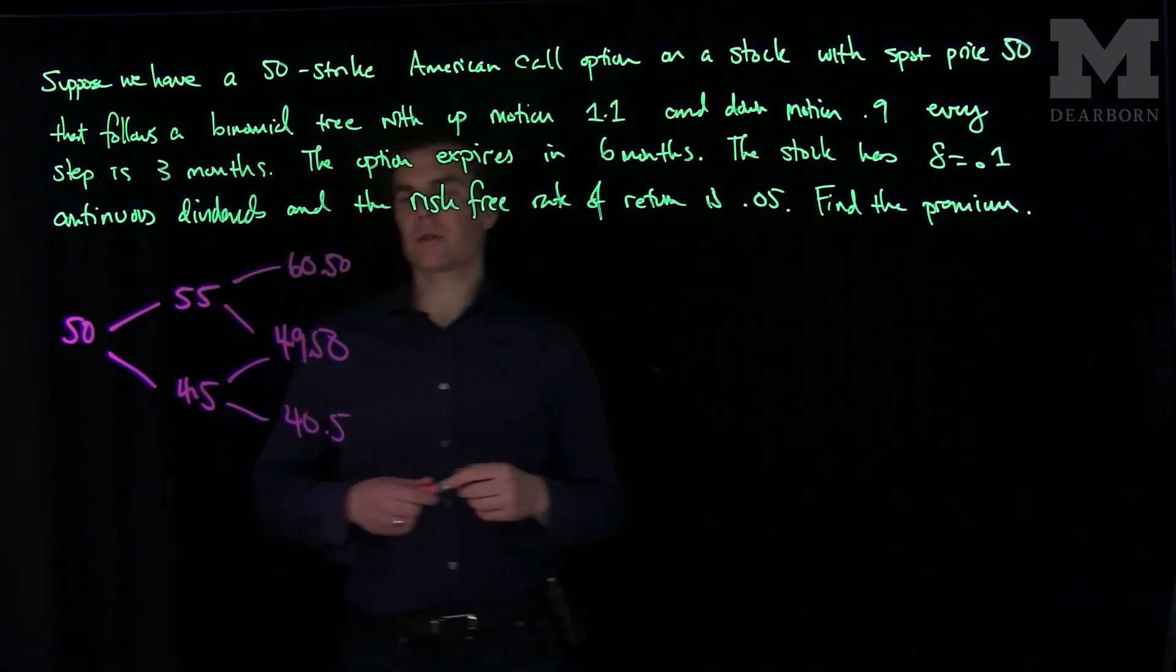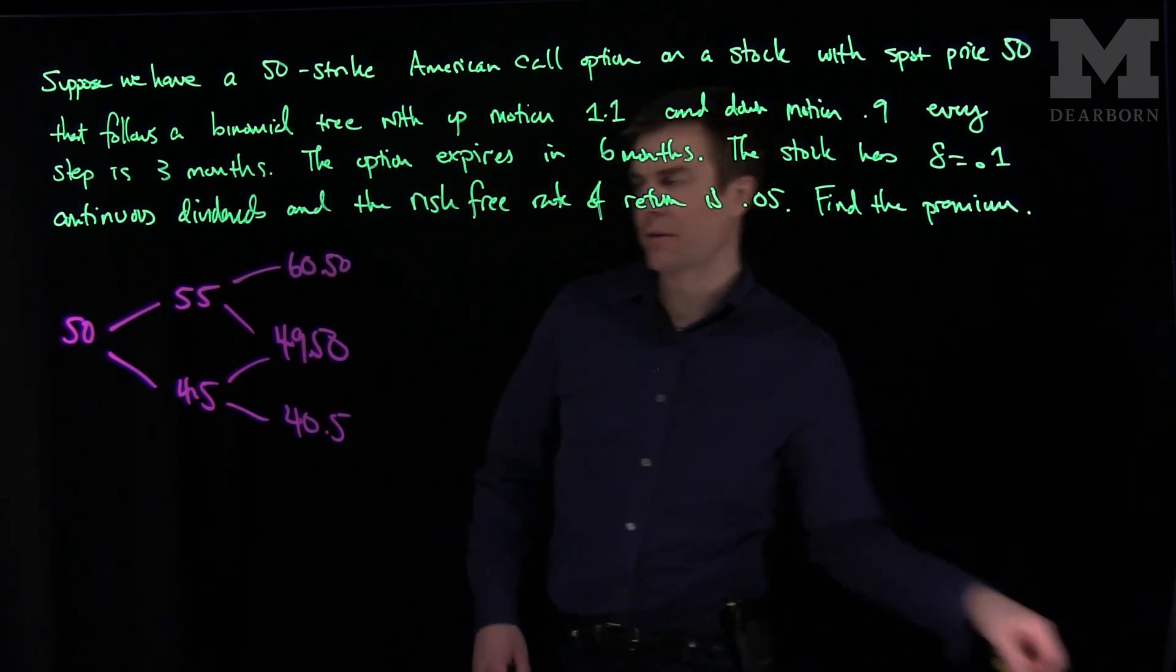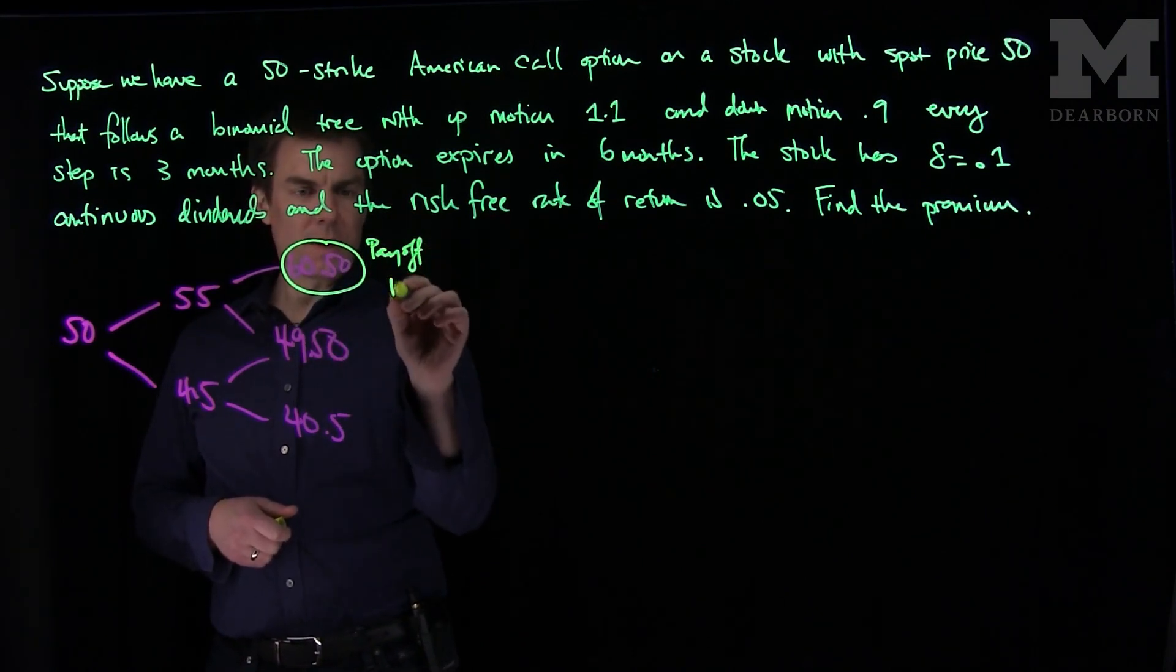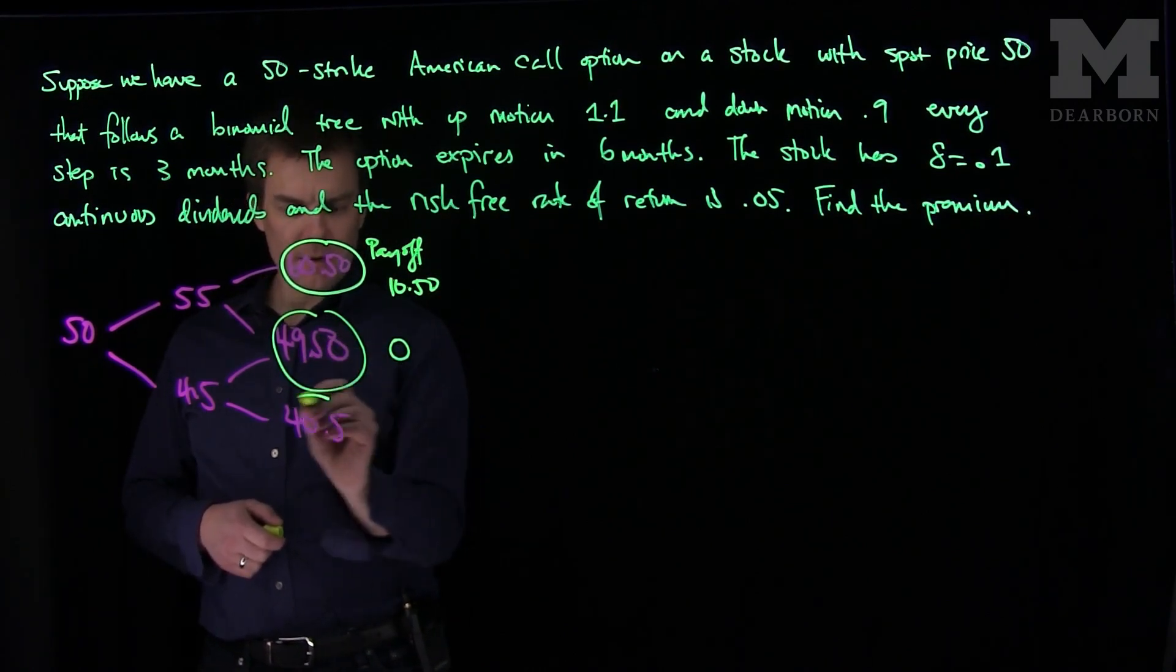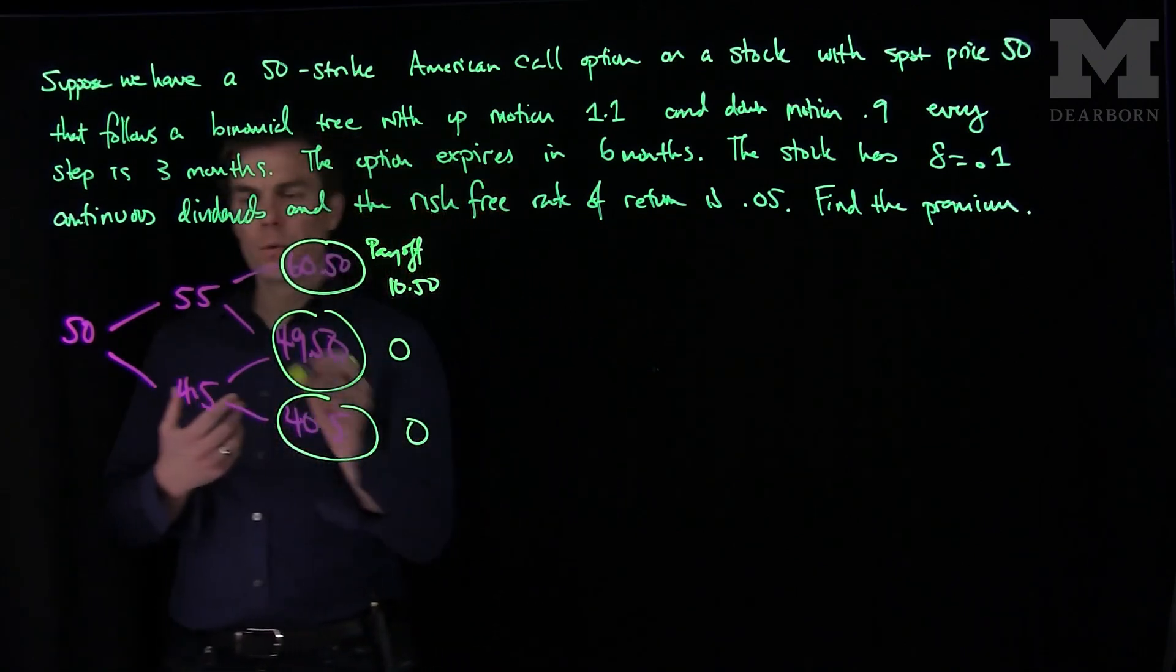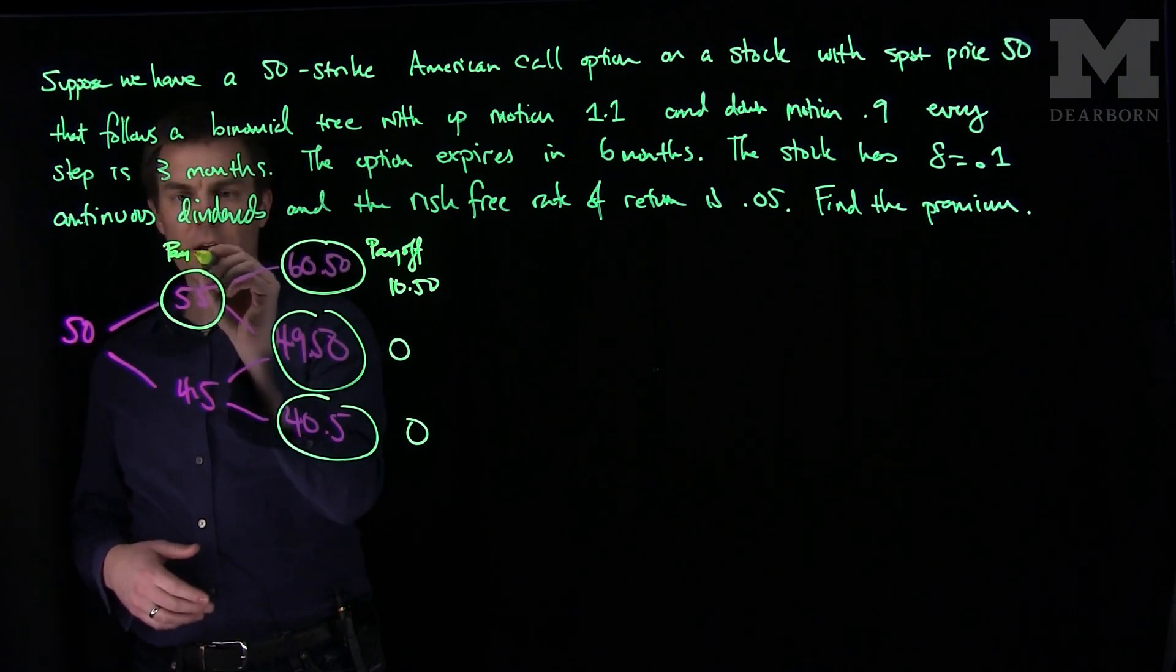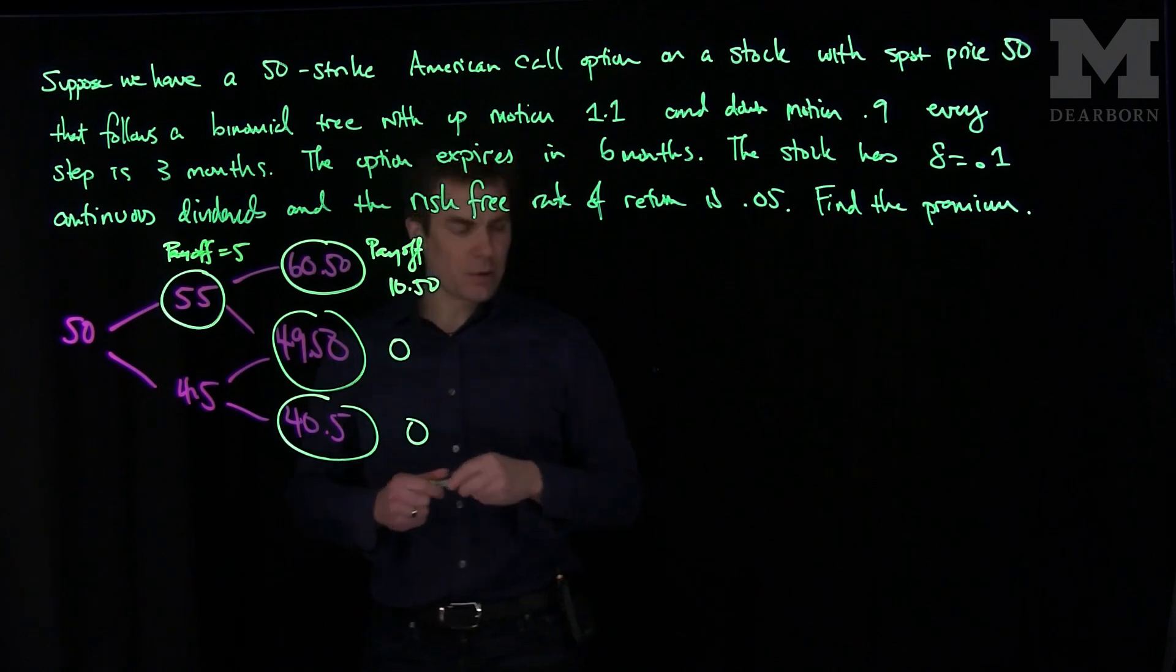So that's the structure of our tree. Since this is an American option, it will pay off at different nodes. Since it is a 50 strike, the payoff over here will be $10.50. The payoff over here is going to be 0, and the payoff over here is going to be 0. So only at the top node of this two-step tree does the American option pay off. We should also note that since it is an American option, I can exercise it early at this node 55 and get a payoff of 5.